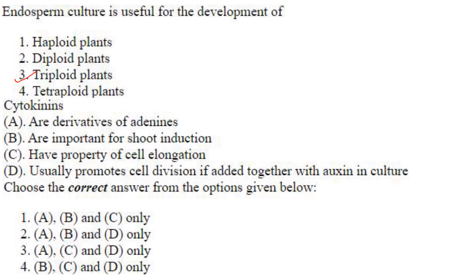Cytokinins: they are derivatives of adenines — yes. They are important for shoot induction — yes. They have the property of cell elongation — no. They usually promote cell division if added together with auxin in the culture — yes. So A, B, and D. Answer is option 2.